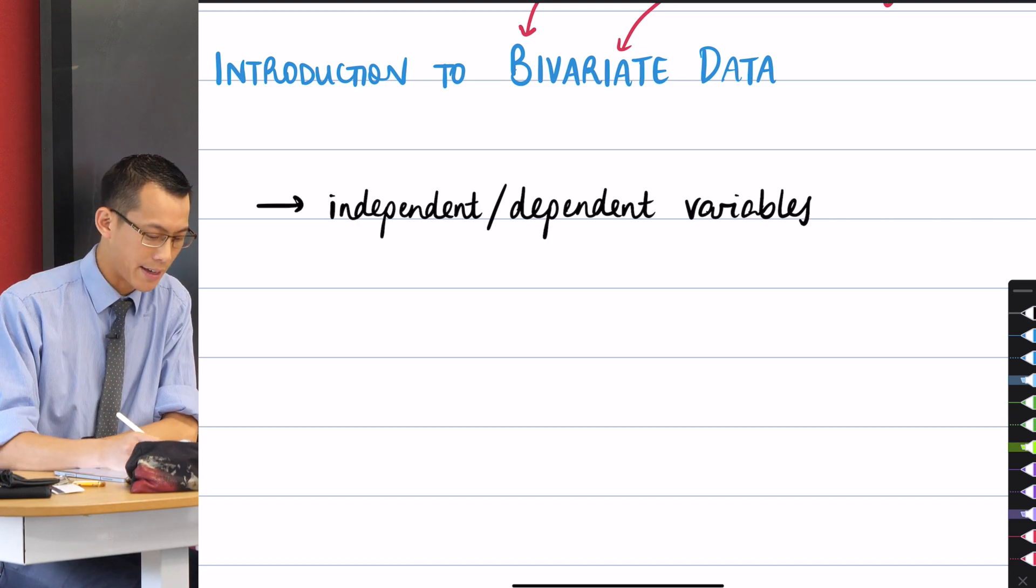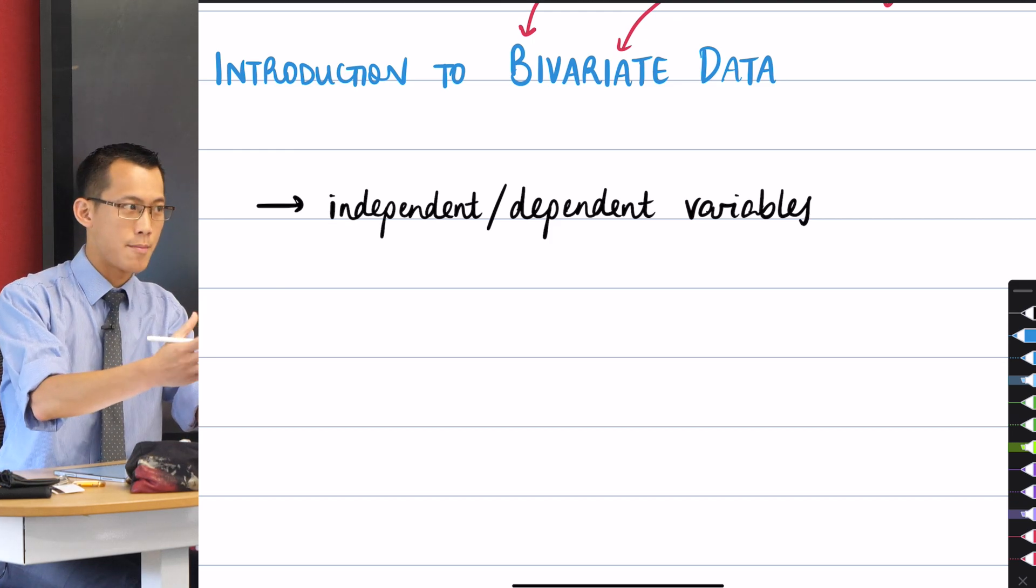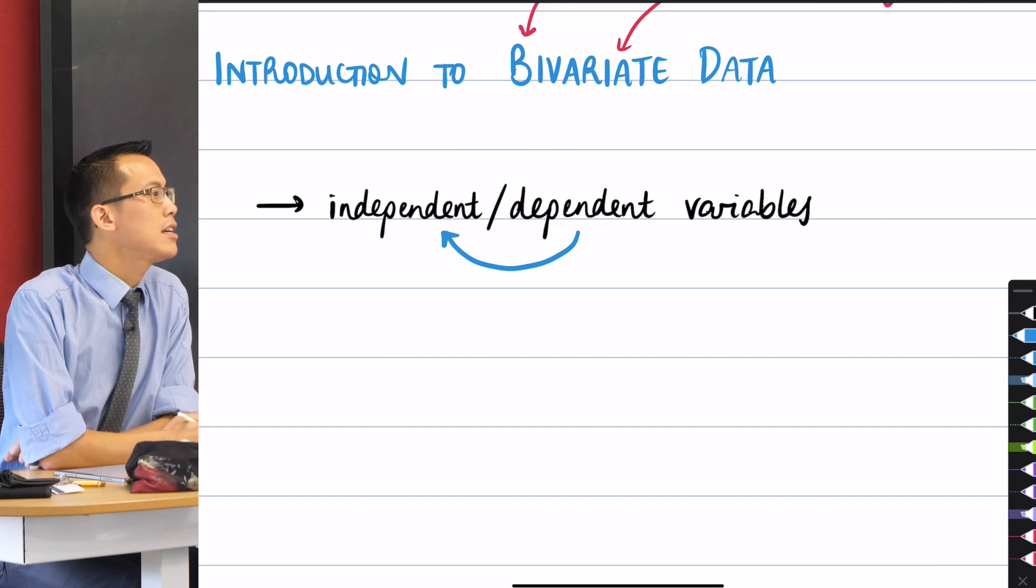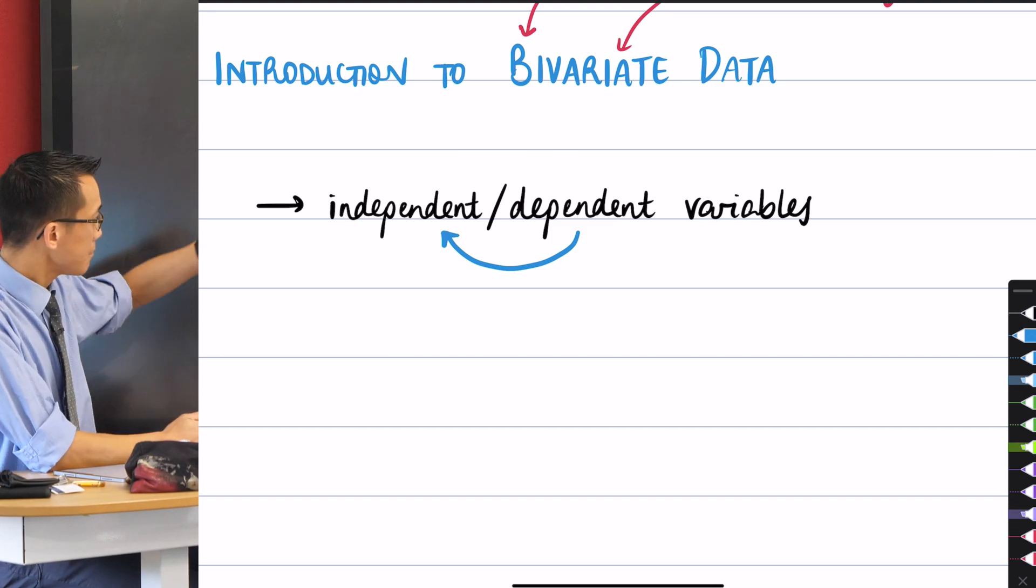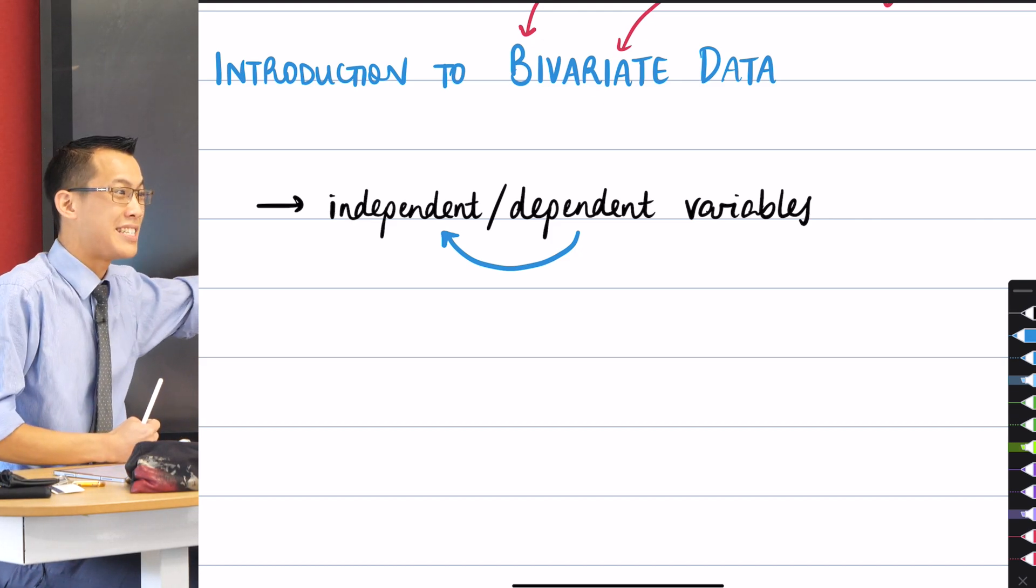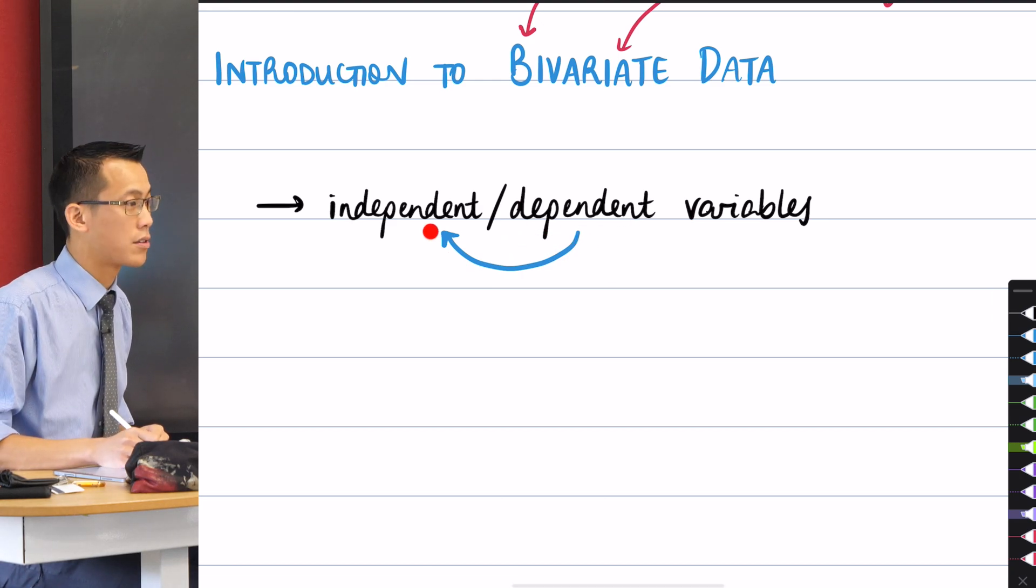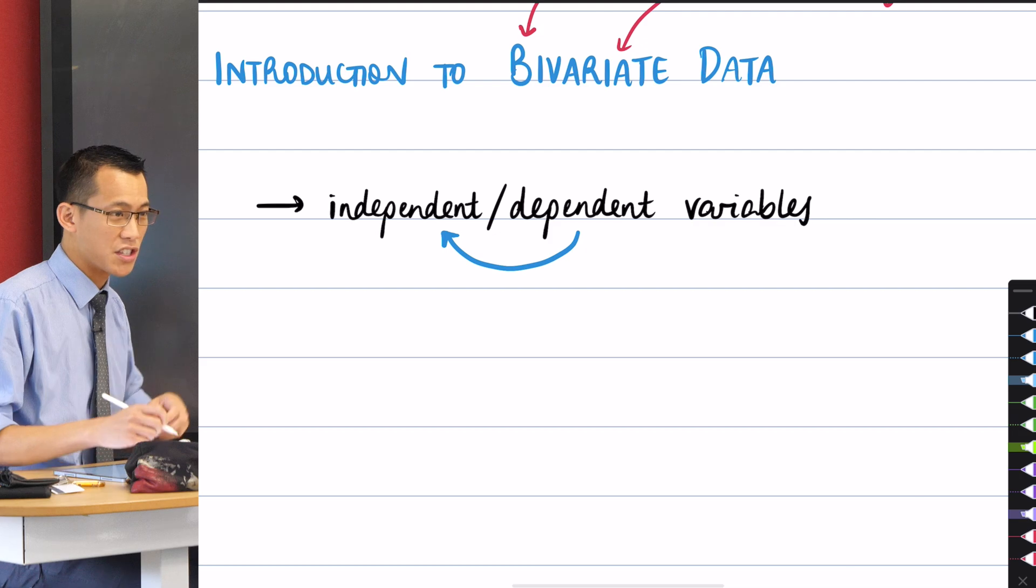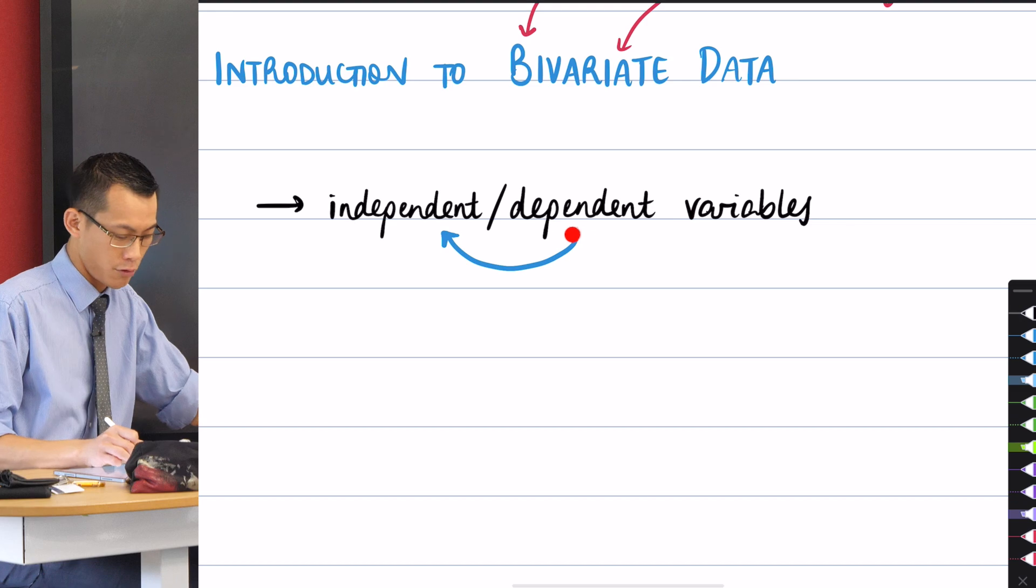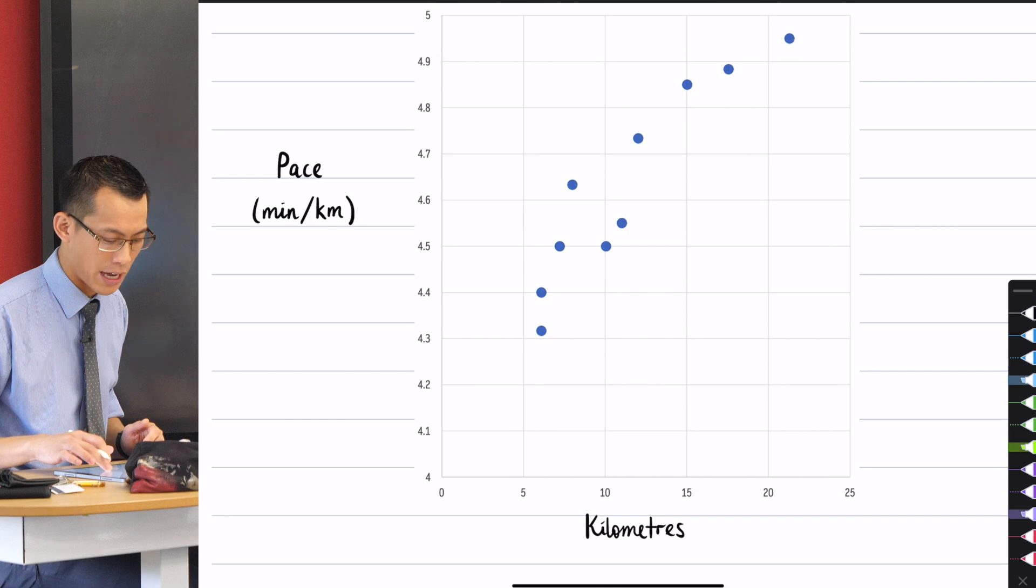Which is exactly what it sounds like. There is some relationship between these two things, and the dependent variable changes in response to the independent variable. Let me say that one more time, right? When you have a look at your two variables, you can tell which one is independent and which one is dependent based on which one of them changes in response to the other. There's one that's kind of free, you can make it whatever you like, and then the other one just kind of follows suit depending on the independent variable.